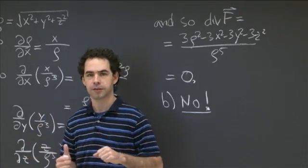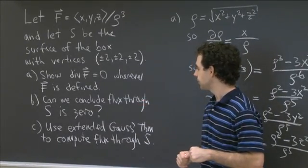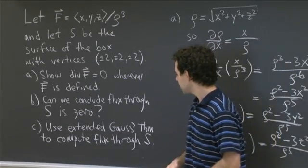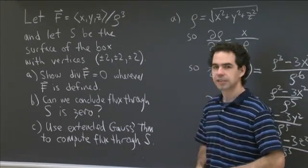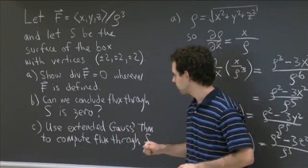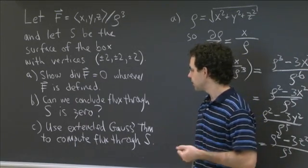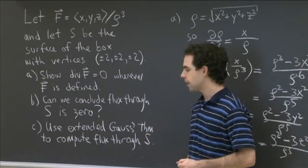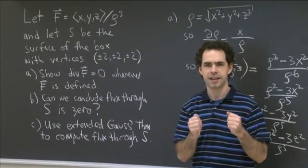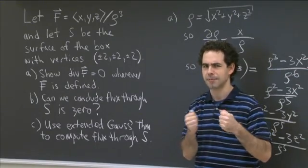So now let's look at part c. We can't conclude that the flux is 0, but we still want to know what the flux is. Part c suggests maybe we can still use the divergence theorem — now we're calling it the extended Gauss's theorem — to compute what this flux is.